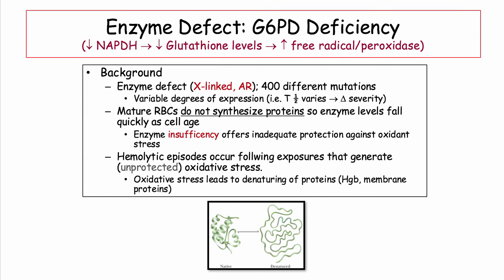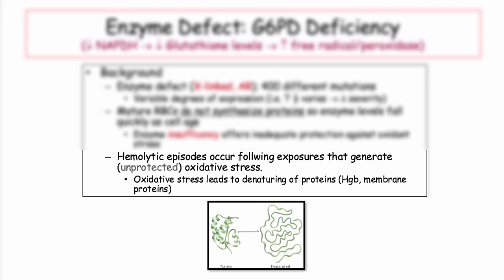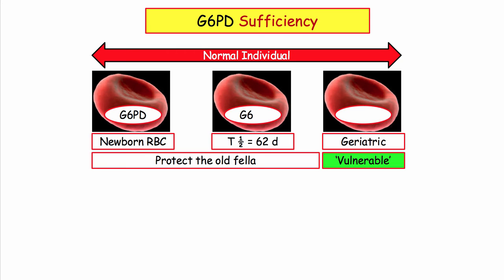This is an X-linked recessive disorder with lots of different mutations that affect the degree of clinical expression. RBCs are born with as much G6PD as they will have in their lifetime; levels fall as the cells age. If you are deficient at red cell birth, RBCs become quickly deficient since they have no capacity to synthesize additional enzyme. In a normal individual, the enzyme half-life is 62 days, and only senescent cells become vulnerable to injury.